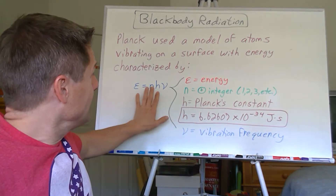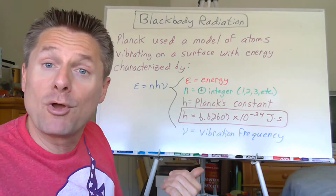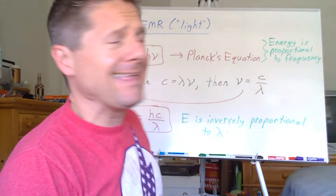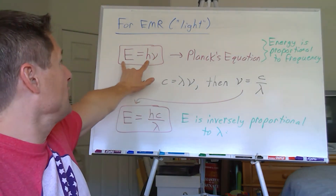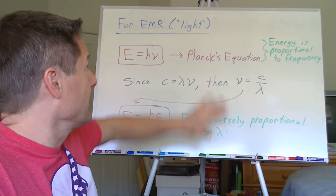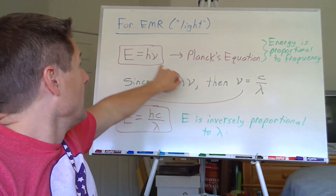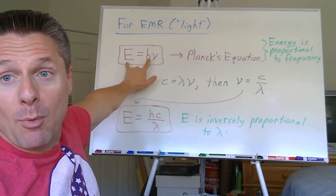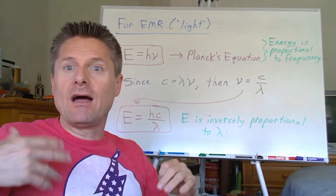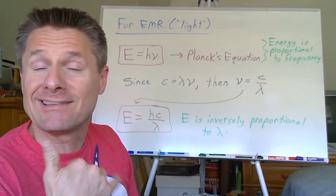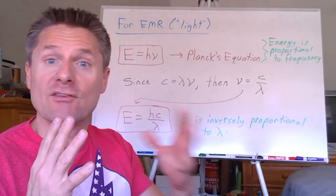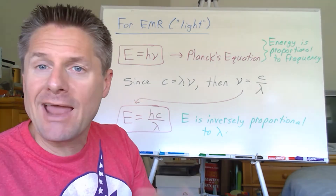To relate this to electromagnetic radiation, we use Planck's equation: E = hν, where energy equals Planck's constant times frequency. Energy and frequency are directly proportional. Many people prefer to think of electromagnetic radiation in terms of frequency because it directly corresponds to energy. Personally, the instructor prefers wavelengths — like 400 to 750 nanometers for visible light — but energy and wavelength are inversely proportional.